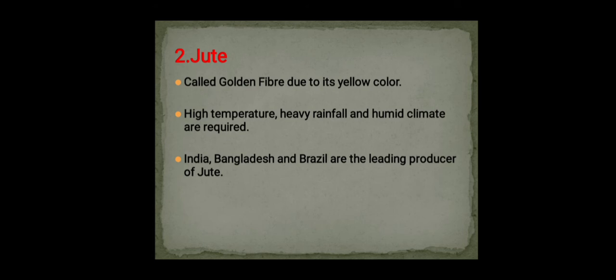Jute is also called the golden fiber due to its yellow color. High temperature, heavy rainfall, and a humid climate are required. India, Bangladesh, and Brazil are the leading producers. Jute is a long, soft, shiny fiber. Jute fibers have been an integral part of the culture of West Bengal and parts of Bangladesh, and are mainly composed of cellulose and lignin.